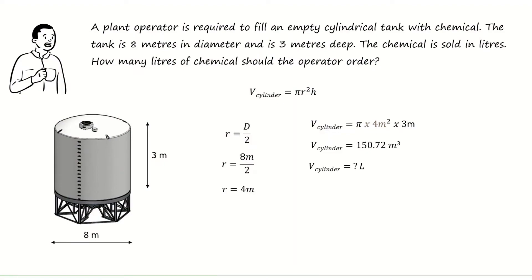Now we want the volume of the cylinder in liters. To put it into liters, let's multiply - 1000 liters is the same as a cubic meter. 150.72 cubic meters multiplied by 1000 liters per cubic meter, the cubic meters will cancel leaving us with liters. Therefore, the volume of the cylinder is 150,720 liters. The operator should order 150,720 liters.